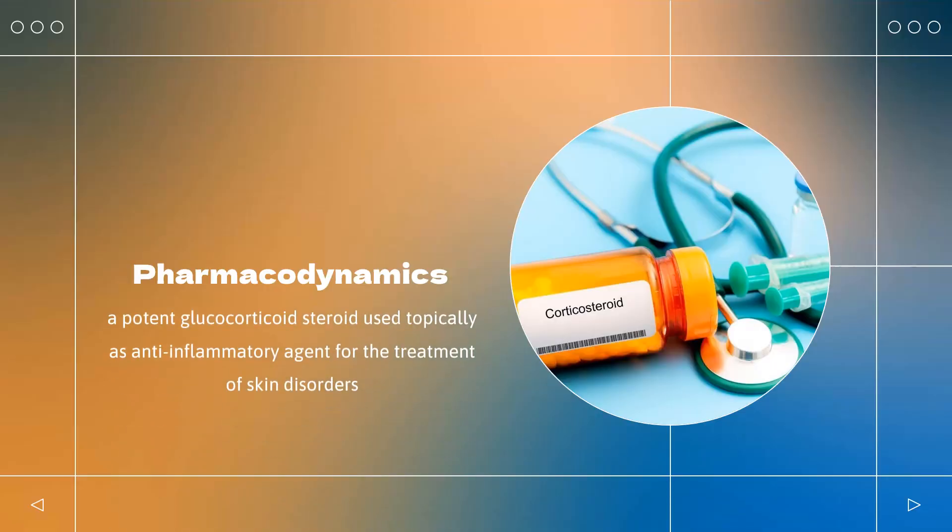Pharmacodynamics: Fluocinonide is a potent glucocorticoid steroid used topically as an anti-inflammatory agent for the treatment of skin disorders such as eczema. It mediates its effects to relieve itching, redness, dryness, crusting, scaling, inflammation, and discomfort associated with inflammatory skin conditions.